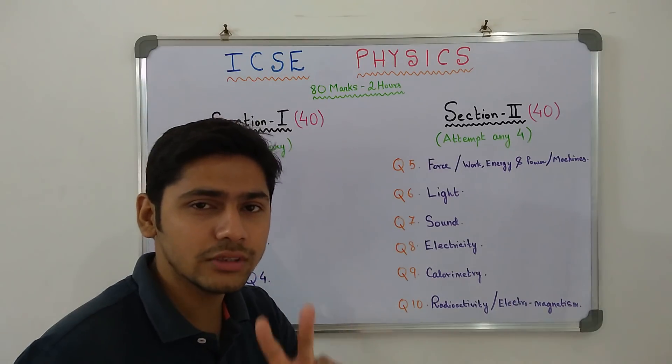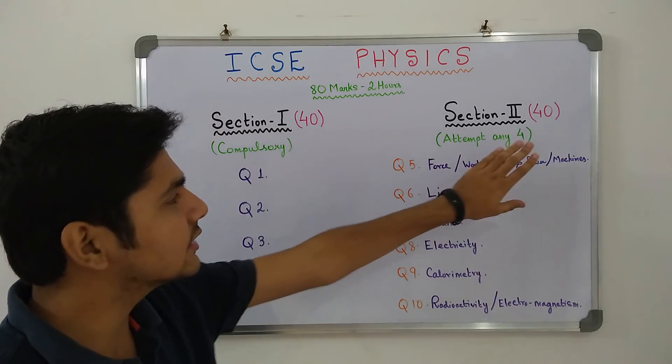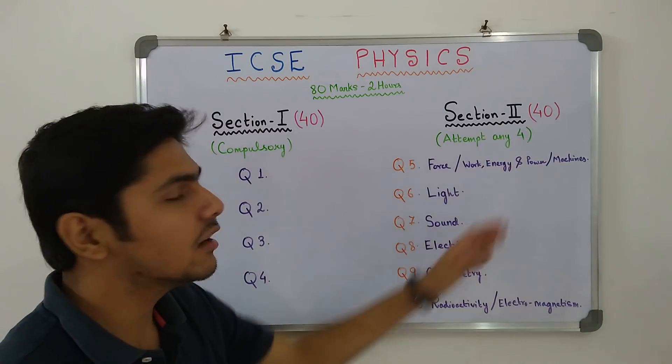The question paper is divided into 2 sections. Section 1 is 40 marks and section 2 is also 40 marks. We begin with section 1.